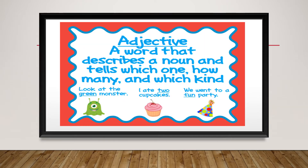Next one is adjective. An adjective is a word that describes the noun and tells us which one, how many, and which kind. For example: look at the green monster. I ate two cupcakes. We went to a fun party. In these sentences, green, two, and fun are the adjectives — these words give us information about the noun.